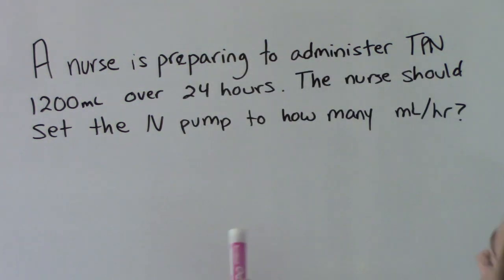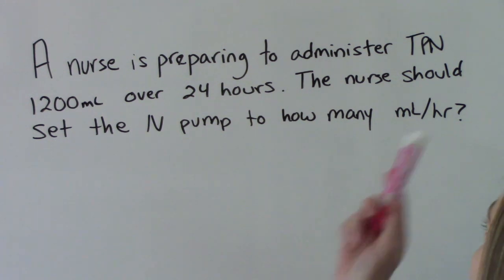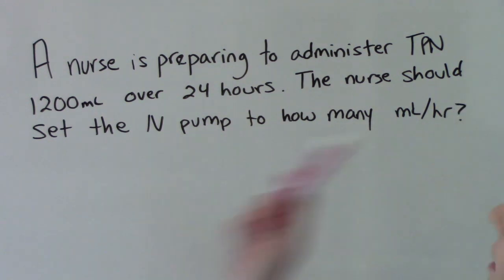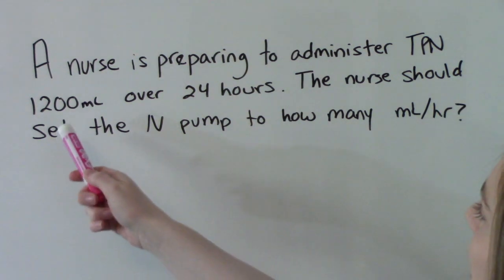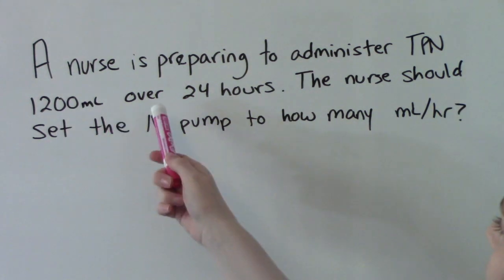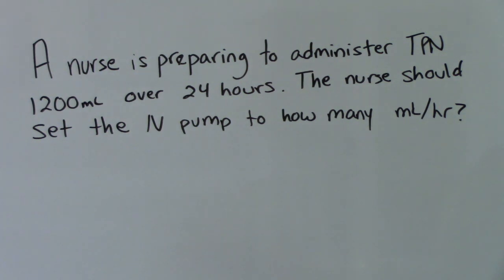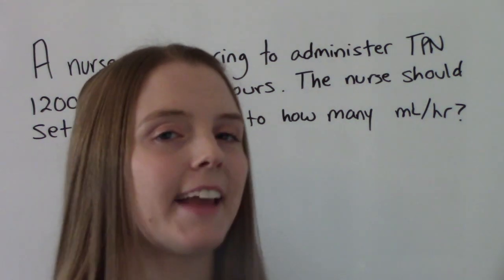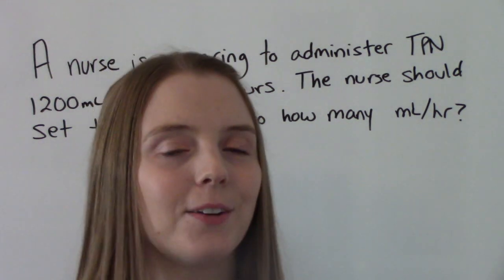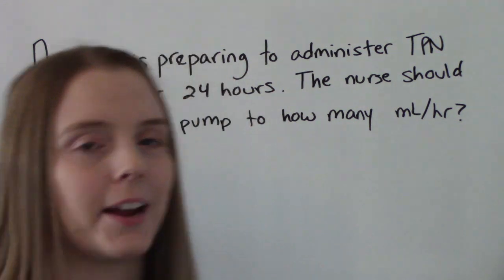A nurse is preparing to administer TPN, 1200 mLs over 24 hours. The nurse should set the IV pump to how many mLs per hour? So pause it. Now let's work it out and see if you got it right.